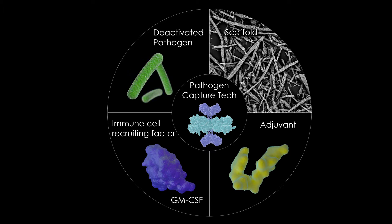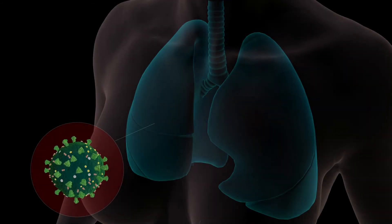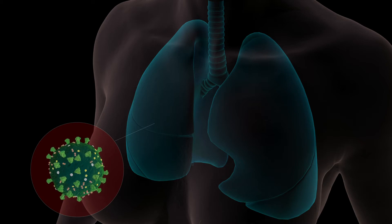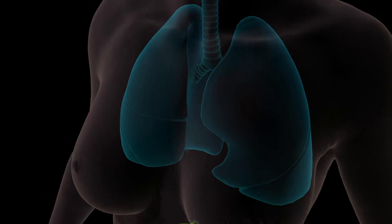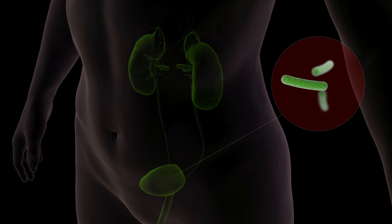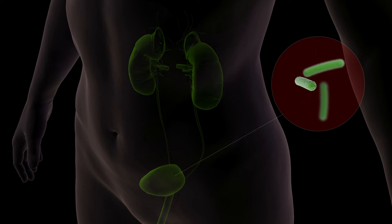They have also demonstrated protection against skin lesions caused by methicillin-resistant Staphylococcus aureus, also known as MRSA. Currently, the Wyss team is further testing its COVID-19 vaccines in preclinical studies and developing a prototype vaccine against E. coli bacteria that cause urinary tract infections, or UTIs, particularly in women, which frequently become antibiotic-resistant.